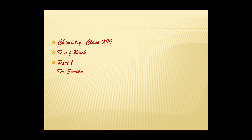The F block consists of elements in which 4f and 5f orbitals are progressively filled. They are placed in a separate panel at the bottom of the periodic table. The names transition metals and inner transition metals are often used to refer to the elements of D block and F block respectively. The D block spans Period 4 to Period 7 and Group 3 to Group 12. In the D block, the last electron enters the D sub-shell, and in the F block, the last electron enters the F sub-shell — called inner transition metals.